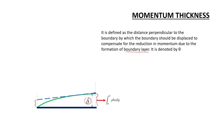The mass flow rate can be written as the integral from 0 to delta of rho times v times u dy, where b is the plate width and u is the velocity as a function of y. The streamline is slightly shifted and compensated.